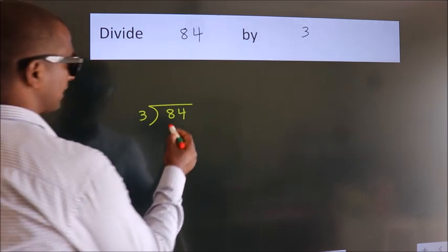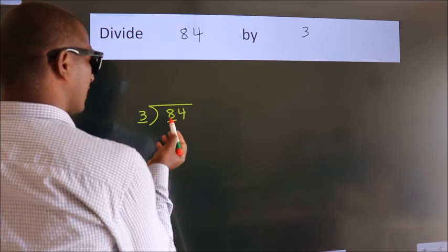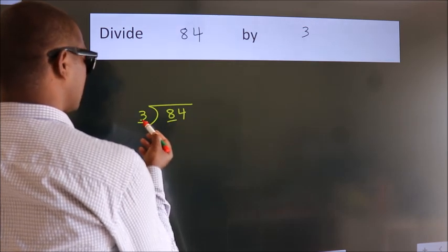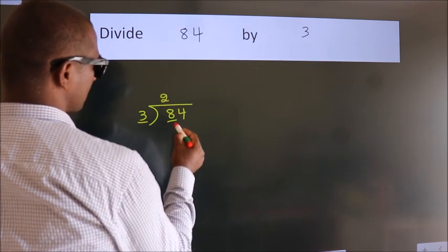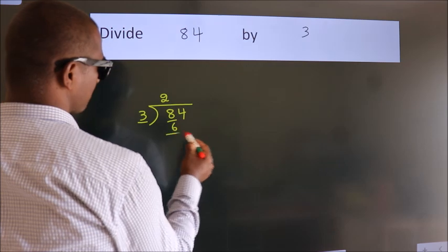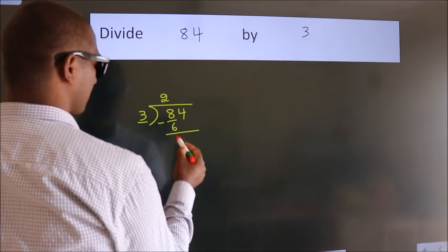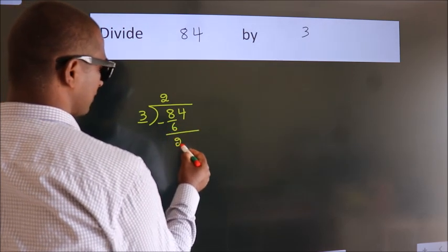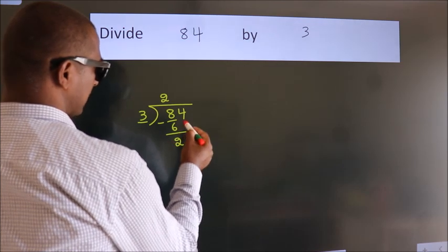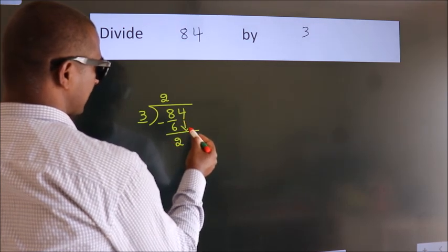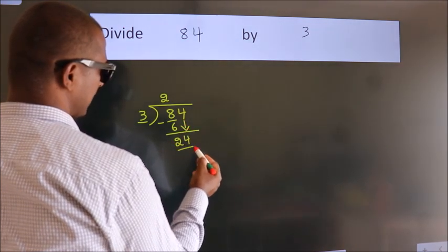Here we have 8, here 3. A number close to 8 in the 3 table is 3 twos, 6. Now we should subtract, we get 2. After this, bring down the beside number, so 4 down, so 24.